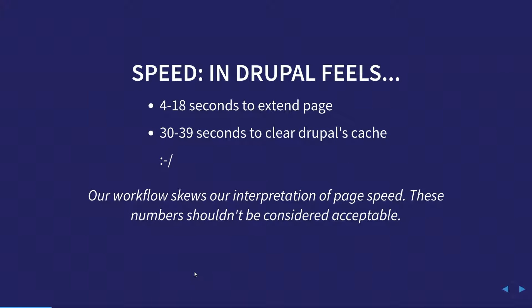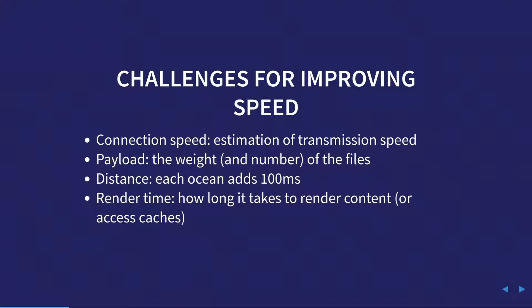I see this in Drupal all the time: if you're doing Drupal all day with all the debugging enabled and a heavy site, clicking the Extend page can take 18 seconds with lots of modules. Clearing the cache takes 30 to 39 seconds on some of my sites. Our workflow skews our interpretation of page speed. If you sit there all day hitting cache clear and it takes 30 to 60 seconds, you think it's normal. It's not. So maybe we're not the best judges of this.